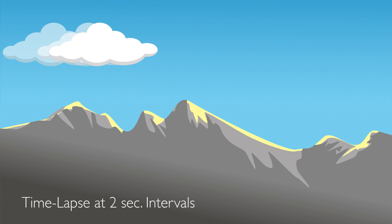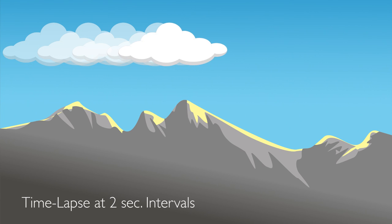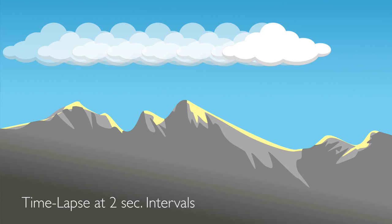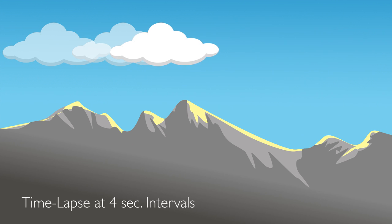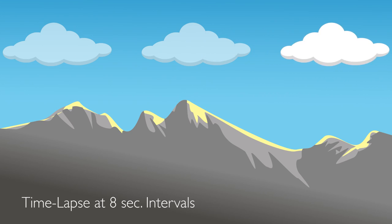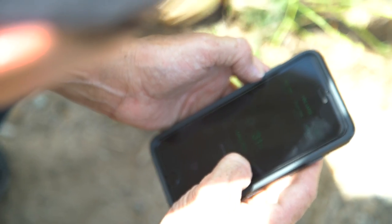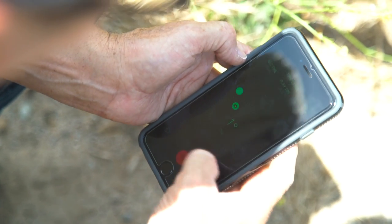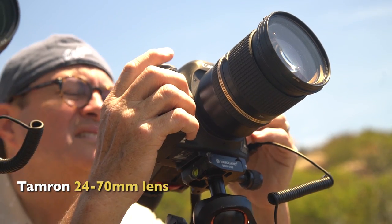If I need 240 frames to get 10 seconds of time-lapse, it only takes about eight minutes to do a two-second interval, but 16 minutes to do a four-second interval, and 32 minutes to get an eight-second interval. In our test, the first eight minutes I'm seeing the same clouds on all cameras, the second eight minutes only on two cameras, and the last eight minutes only on the eight-second interval camera. So to get 240 frames with an eight-second interval takes a lot longer than with a four-second interval.